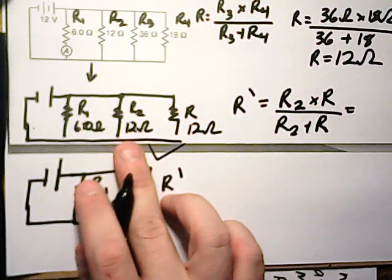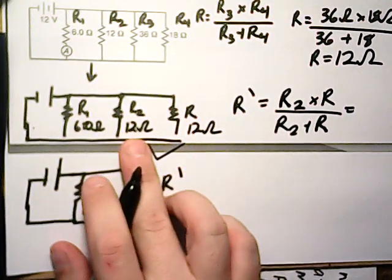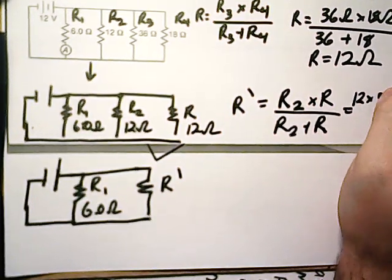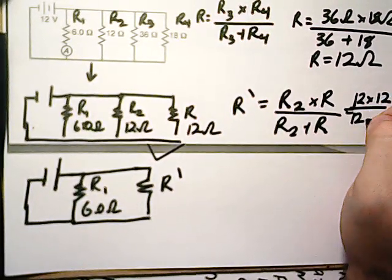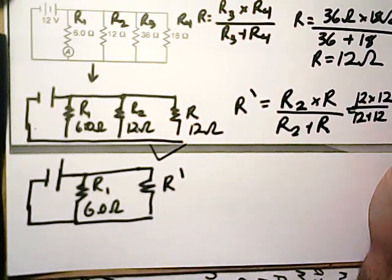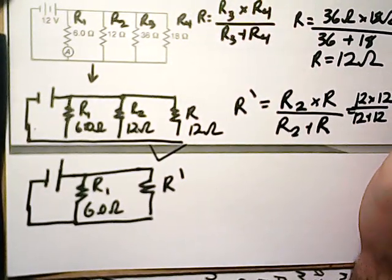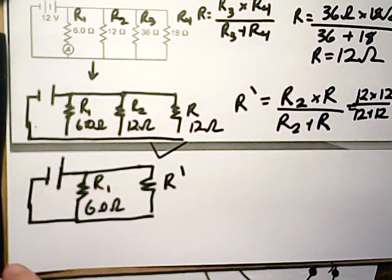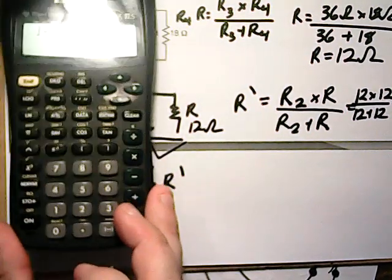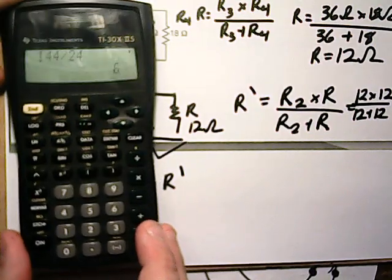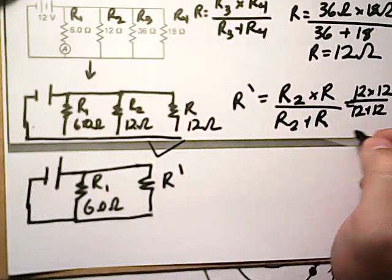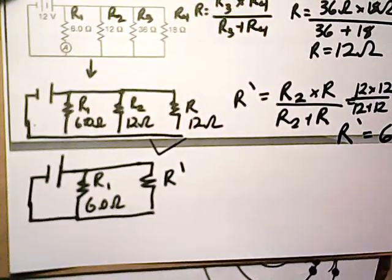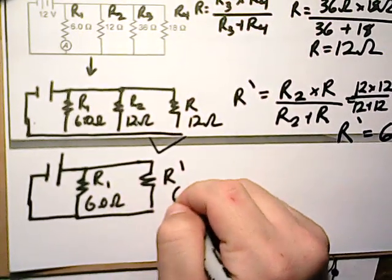So here we're going to do 12 times 12 divided by 12 plus 12. So we got 144 over 24. So we should get 6. 144 divided by 24. We get 6 is our answer. So R prime equals 6 ohms. So we have 6 ohms here.